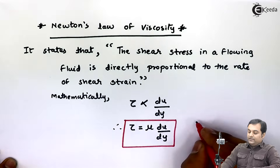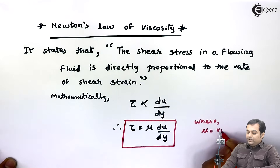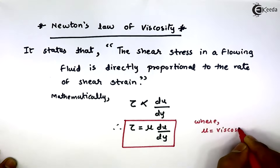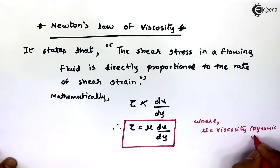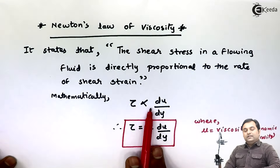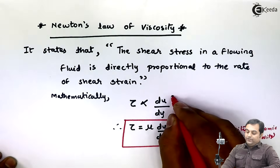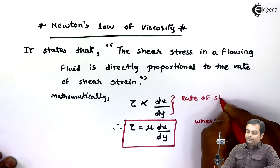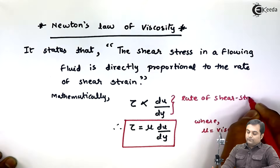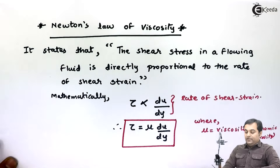Here, mu (μ) is called viscosity, or dynamic viscosity. The term du/dy is called the rate of shear strain. So shear stress is directly proportional to the rate of shear strain.